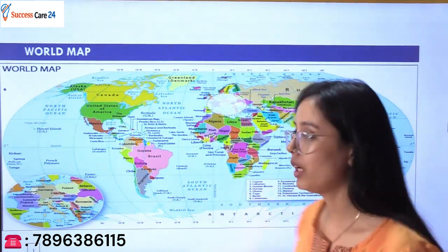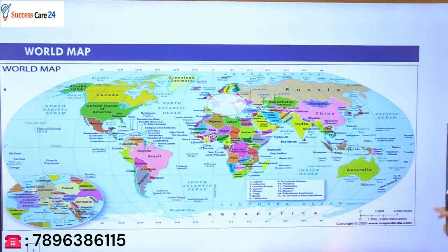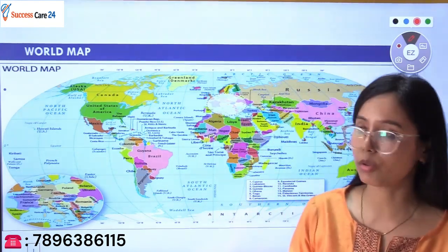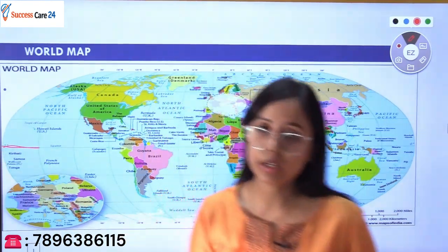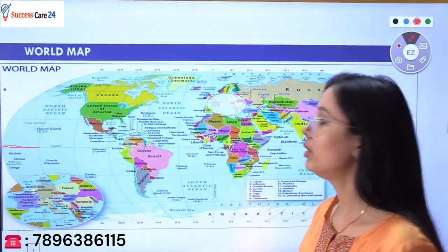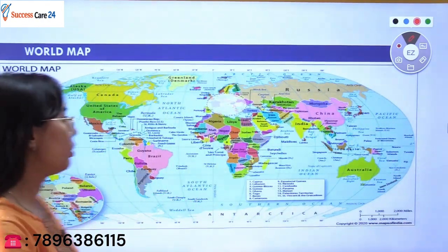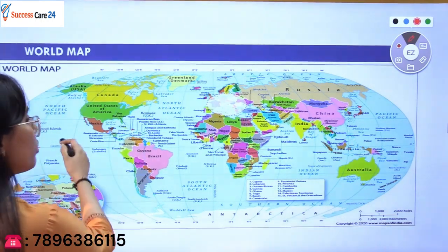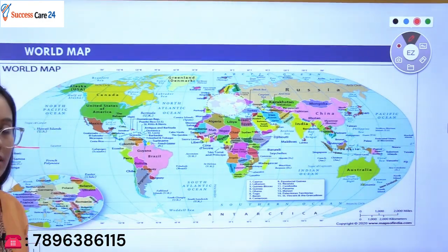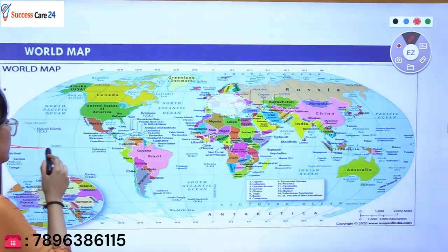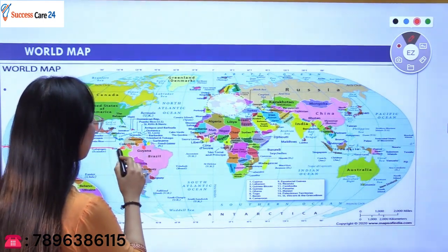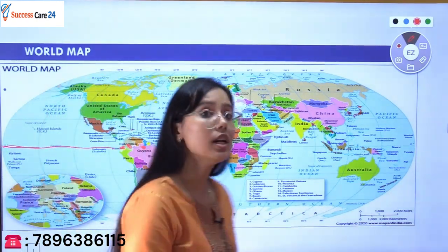I hope the Tropic of Cancer is clear now — 23 and a half degrees north, passing through 17 countries. Now let's see how many countries the Equator passes through. The Equator is at 0 degrees latitude. Let's start with the South American continent. In South America, the Equator passes through Colombia, Guyana, and Brazil — three countries of South America.